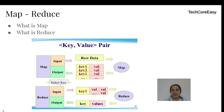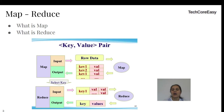Map, as the name itself indicates, is a mapping of some value to another value. For example, if you know SQL, while selecting columns you are calculating the age from a given date of birth column — that is mapping, generating a new value. Reduce reduces the value — for example, an aggregation function where you aggregate records by city to find how many employees are present per city.